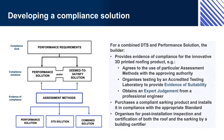For a DTS solution, the builder purchases and installs metal sheet roofing complying with AS 1562.1:2018 (Design and Installation of Sheet Roof and Wall Cladding). Because the metal roof requires sarking to be compliant, the builder also purchases and installs a sarking product complying with AS/NZS 4200 Parts 1 and 2 (Pliable Building Membranes and Underlays), then organises inspection by a building certifier. For a combined DTS and performance solution, the builder provides evidence of compliance for the innovative 3D printed roofing product — agreeing to use particular assessment methods with the approving authority, organising testing by an accredited testing laboratory, obtaining an expert judgment from a professional engineer — while purchasing a compliant sarking product installed in compliance with the appropriate standard, with post-installation inspection and certification of both the roof and sarking by a building certifier.